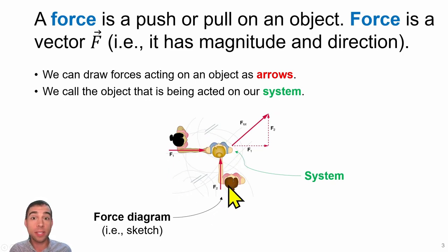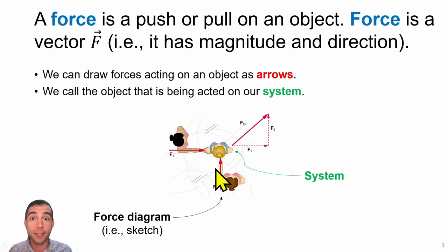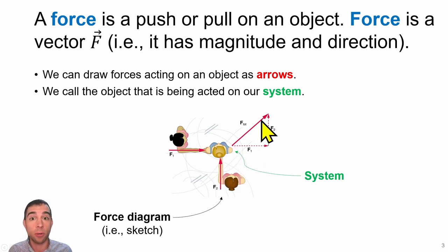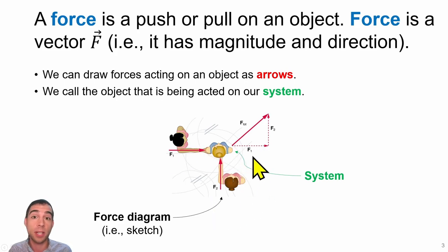Here you can see a diagram where there's a skater being pushed by two other people on the ice. We draw our forces as vector arrows where the first person is pushing this skater to the right and the second person is pushing this skater up.